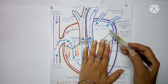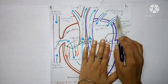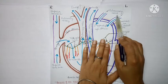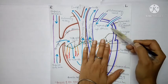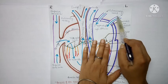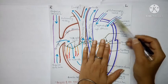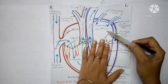Remember this: pulmonary veins are an exception. Usually, when we talk about veins, they carry impure blood. But pulmonary veins are an exception — this is why they carry pure oxygenated blood into the left atrium.